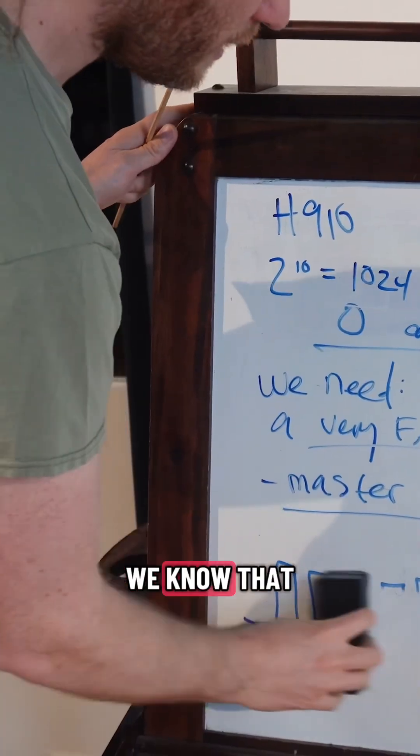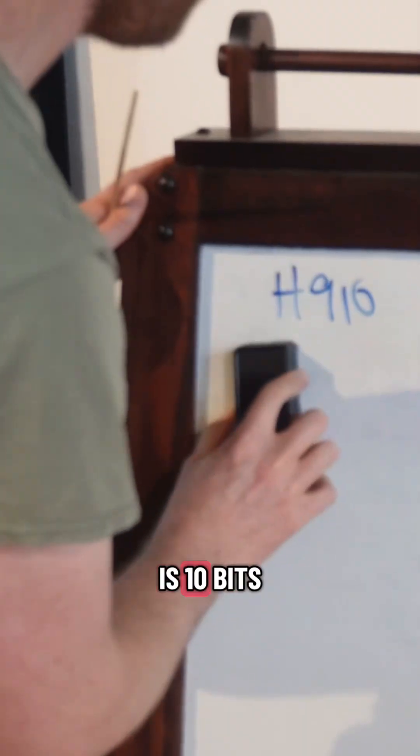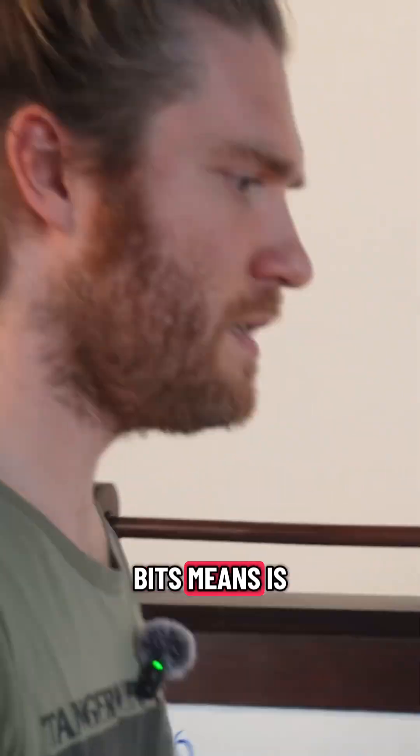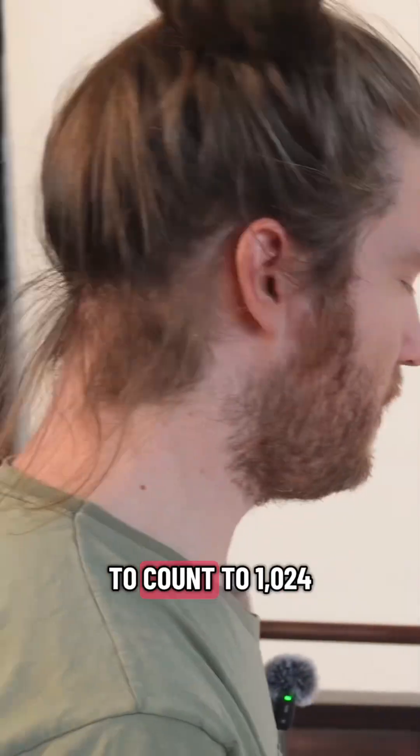So what happens now? I'll tell you. We know that the H910 is 10 bits, and what 10 bits means is that it needs to be able to count to 1024.